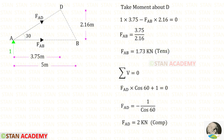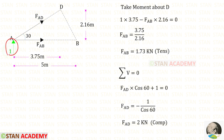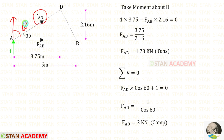Now let us apply the rule sigma V is equal to 0 and find FAD. 1 is acting upwards so that it will be positive. FAD is inclined — we have to make it vertical, and to do that we need 60 degrees. When we make it vertical it will be acting upwards so that it will be positive and we have to multiply with cos 60. For FAD we will get a negative value, which means it is compressive.